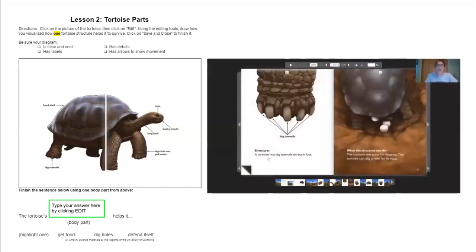Structure: A tortoise has big toenails on each foot. What the structure can do: The toenails are good for digging. The tortoise can dig a hole for its eggs. What is the book trying to teach us now? It seems that every structure has a different function or job. The beak is good for biting leaves. The long neck is good for reaching up for food that's out of reach for the tortoise. And the big toenails are good for digging for the holes for the eggs.